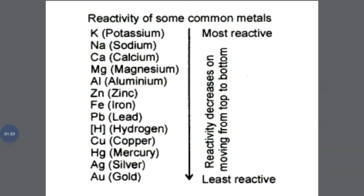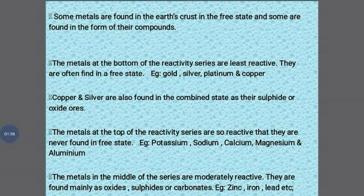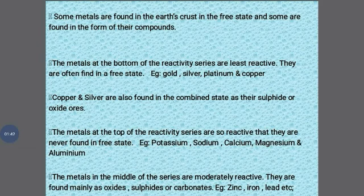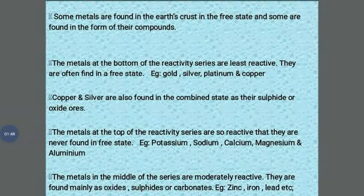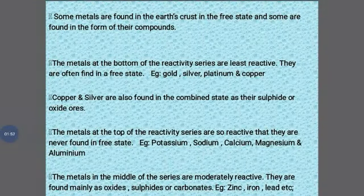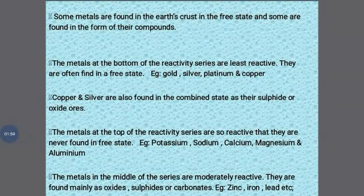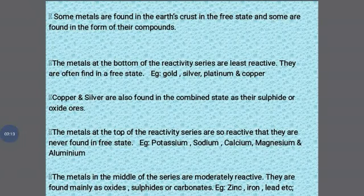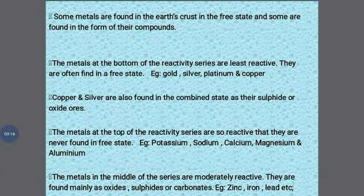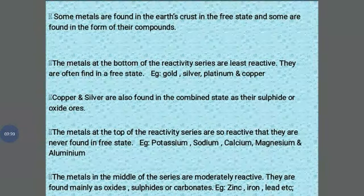Some metals are found in nature in a free state, and some are found in a compound state — either as metal oxide, metal sulfide, or carbonate form. Metals at the bottom of the reactivity series are least reactive and are often found in the free state, e.g., gold and silver. Metals at the top are so reactive they are always found in compound form, e.g., potassium oxide, sodium oxide. Metals in the middle are found mainly as oxides, sulfides, and carbonates, e.g., zinc oxide, zinc sulfide, zinc carbonate.